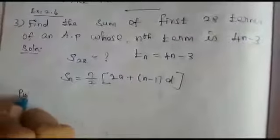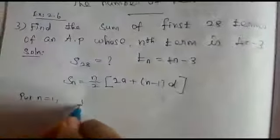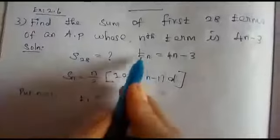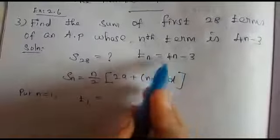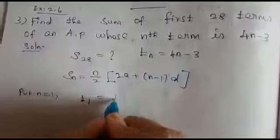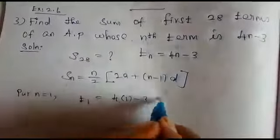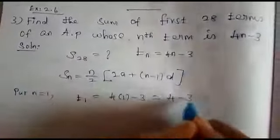First we put n equals 1. T1 equals, put n equals 1 in this nth term, 4 into 1 minus 3. What is 4 into 1? 4 minus 3 equals 1.